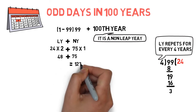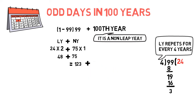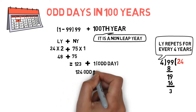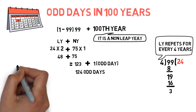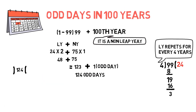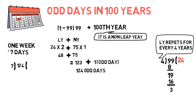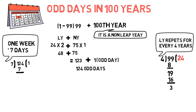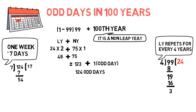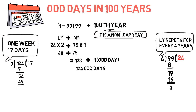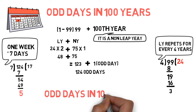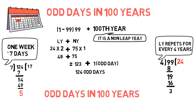By adding all this we get 48 plus 75 equals 123. Plus the 100th year, which is a non-leap year, gives 1 odd day. So the total is 124 odd days. Dividing 124 by 7, because 1 week has 7 days, we get a remainder of 5. Therefore, the number of odd days in 100 years is 5.